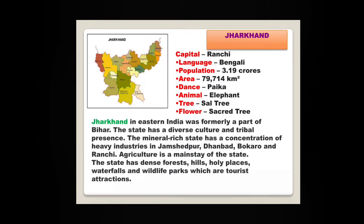Jharkhand — capital Ranchi. Jharkhand in eastern India was formerly a part of Bihar. The state has a diverse culture and tribal presence. The mineral-rich state has a concentration of heavy industries in Jamshedpur, Dhanbad, Bokaro and Ranchi. Agriculture is a mainstay of the state. The state has dense forests, hills, holy places, waterfalls and wildlife parks which are tourist attractions.